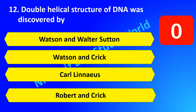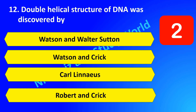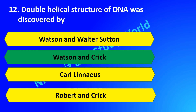The double helical structure of DNA was discovered by dash. Is it Watson and Walter Sutton, Watson and Crick, Carl Linnaeus, or Robert and Crick? The answer is Watson and Crick.